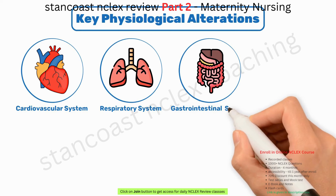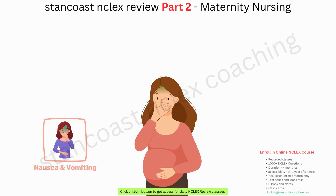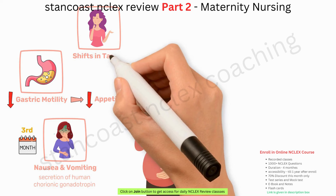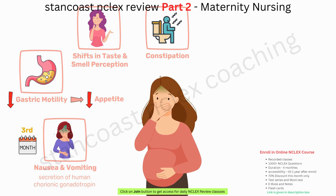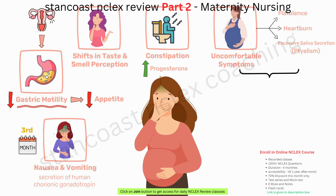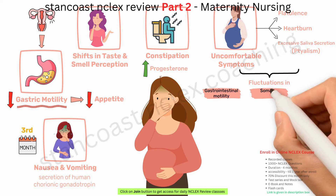In the gastrointestinal system, nausea and vomiting are common in early pregnancy due to the secretion of human chorionic gonadotropin, although these symptoms typically subside by the third month. Decreased gastric motility may lead to reduced appetite. Pregnant individuals often report shifts in taste and smell perception. Constipation can be a common issue, possibly due to increased progesterone production or pressure from the expanding uterus. Symptoms like flatulence, heartburn, and excessive saliva secretion (ptyalism) are driven by fluctuations in gastrointestinal motility, stomach emptying, and rising estrogen levels.